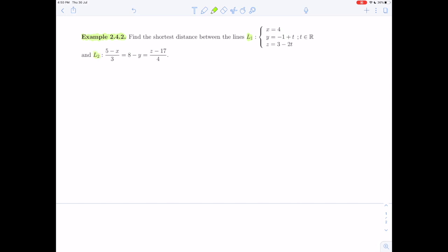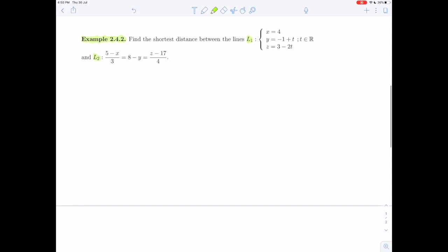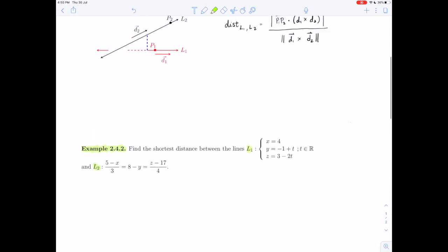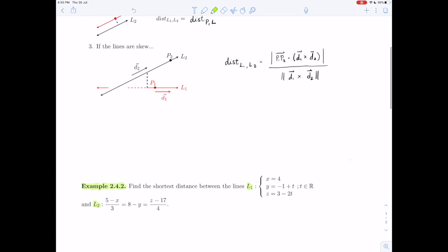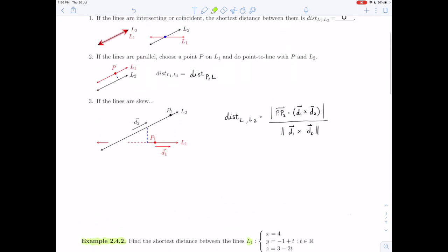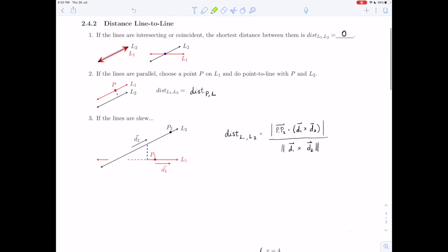Now, we have to remember from a previous video that there are different formulas and different situations which might occur here. If our lines are intersecting or coincident, then the distance between them is zero. If the lines are parallel, then we're going to use a point-to-line formula.